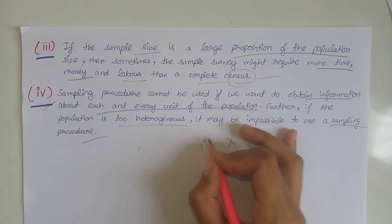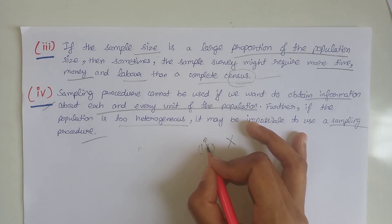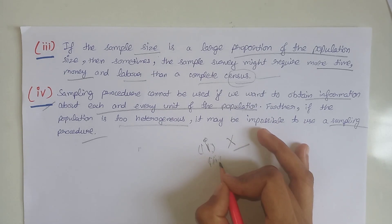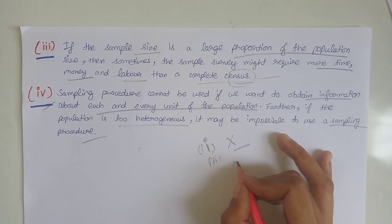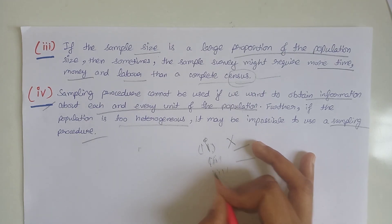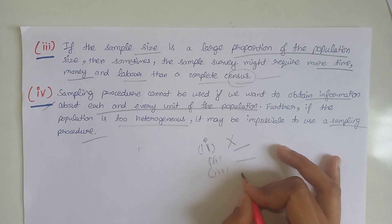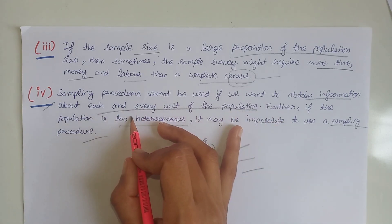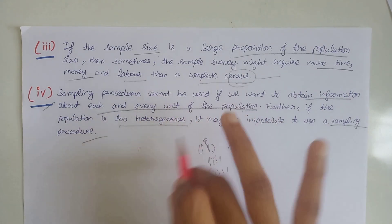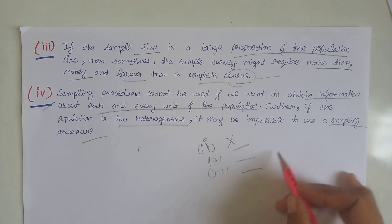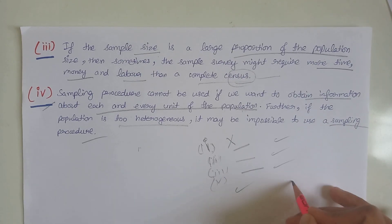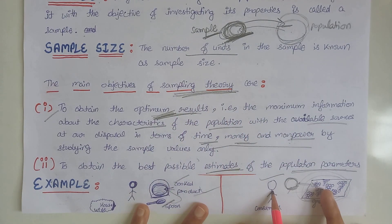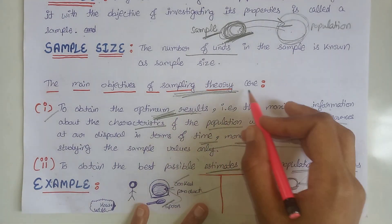To summarize, we studied four limitations of sampling theory: first, if the sample is not drawn in a scientific manner; second, if a suitable sampling design is not used; third, if a suitable sample size is not used; and fourth, if we need information about each and every unit of the population or the population is too heterogeneous. These were the four important limitations of sampling theory, along with its main objectives and illustrative examples.